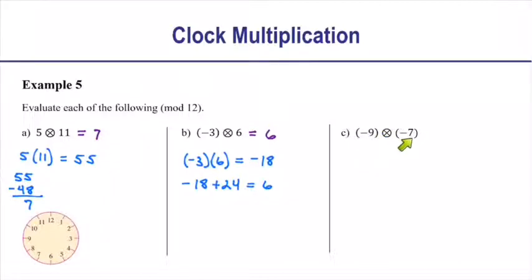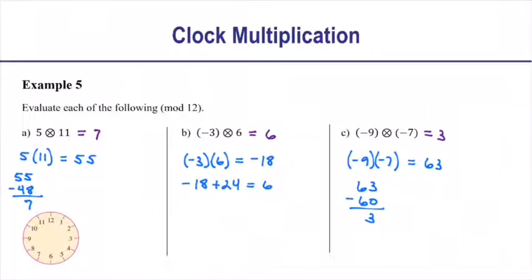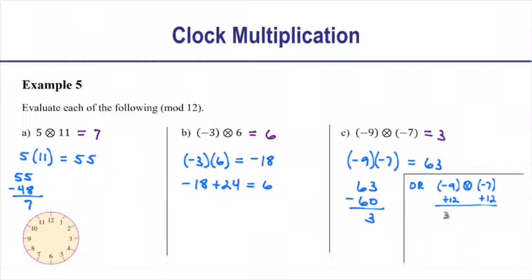For part B: negative 3 circle-times 6. Without the circle: negative 3 times 6 is negative 18. Add 24 to get a positive: negative 18 plus 24 is 6. So negative 3 circle-times 6 is 6. On the clock, going backwards 3 hours, 6 times: starting at 12 and stepping back 3 each time, 6 steps lands at 6. For part C: negative 9 circle-times negative 7. Negative 9 times negative 7 is positive 63. Subtract 60: 63 minus 60 is 3. Alternatively, convert negatives to positives first — negative 9 plus 12 is 3, negative 7 plus 12 is 5 — giving 3 circle-times 5, which is 15, and 15 minus 12 is 3. Either way the answer is 3.